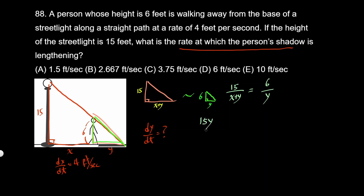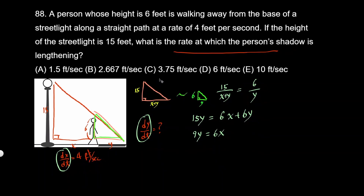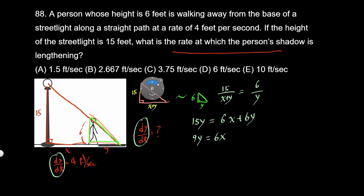So we have 15y is going to equal 6 times (x plus y), which is 6x plus 6y. Let's subtract 6y from both sides. That gives us 9y equals 6x. Now we're given dx/dt and we have to find dy/dt. Let's take the derivative with respect to t: 9 times dy/dt is going to equal 6 times dx/dt.